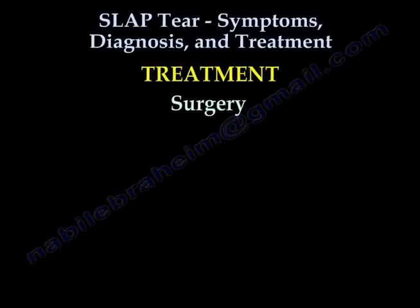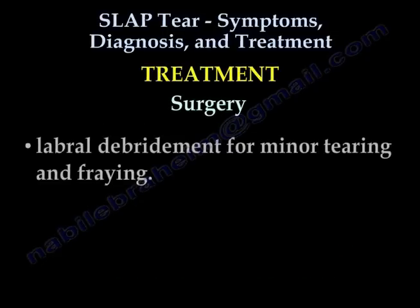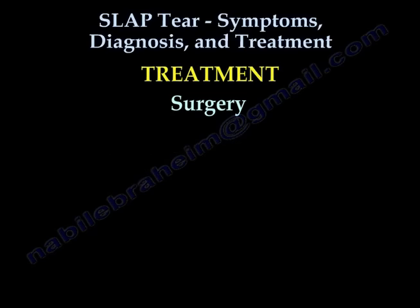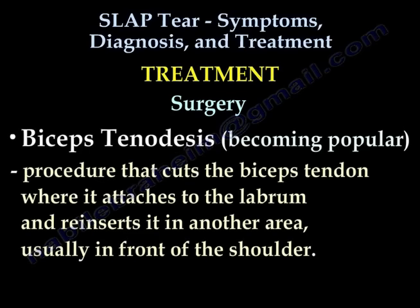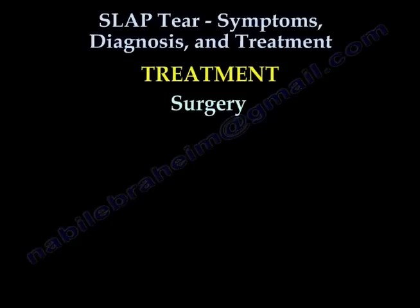Surgical treatment is usually done with labral debridement for minor tearing and fraying. Biceps tenodesis is another procedure, which cuts the bicep tendon where it attaches to the labrum and reinserts it into another area, usually in front of the shoulder.